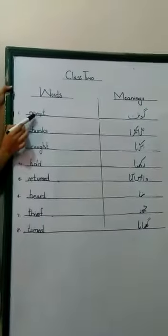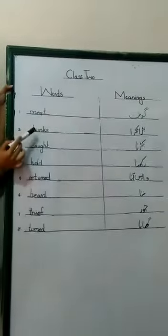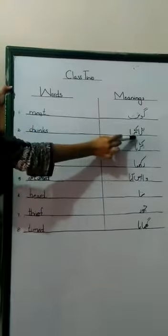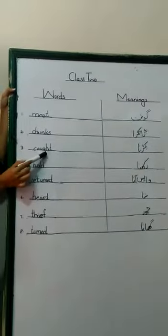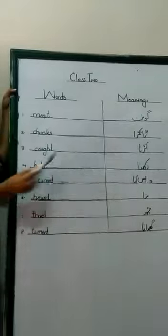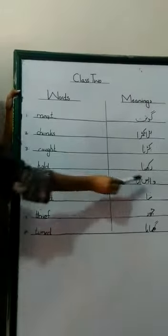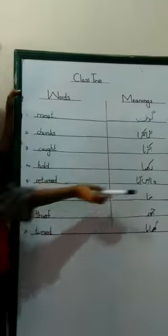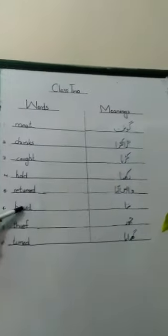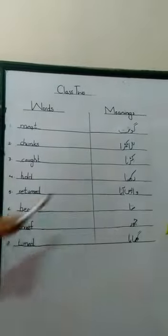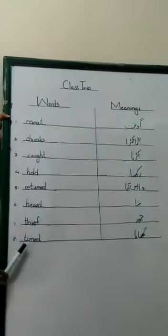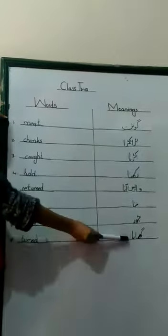First word: meat — M-E-A-T — means gosht. Chunks — C-H-U-N-K-S — means bhaatukra. Caught — C-A-U-G-H-T — means pakarna. Hold — H-O-L-D — means rakhna. Returned — R-E-T-U-R-N-E-D — means waapis aana. Heard — H-E-A-R-D — means sunna. Thief — T-H-I-E-F — means chor. Turned — T-U-R-N-E-D — means ghumana.